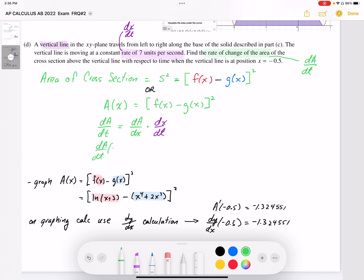So if I want to find the change in the area over the change in time, and I want to find that at x equals negative 0.5, I can find the A prime value at negative 0.5, which I've now established. I've established this value here.